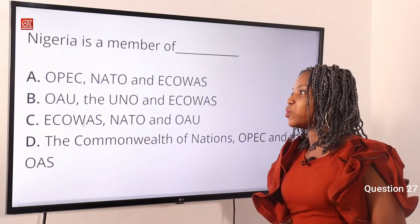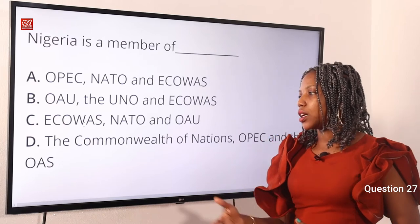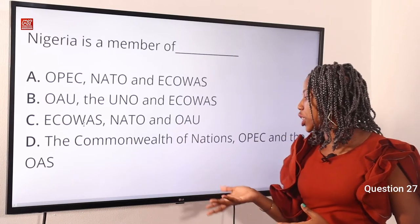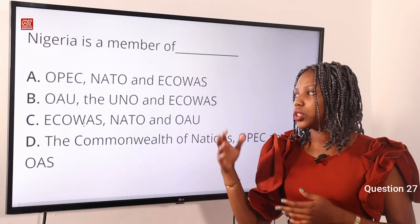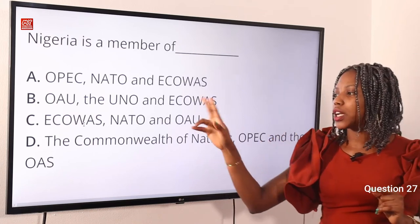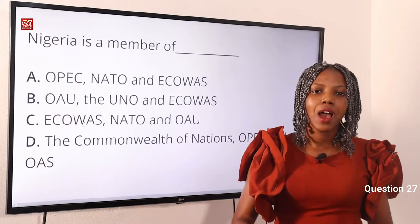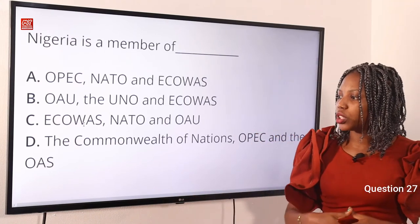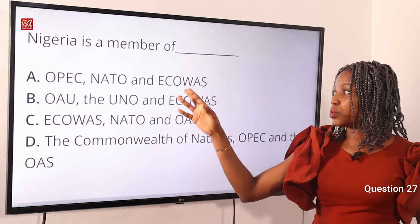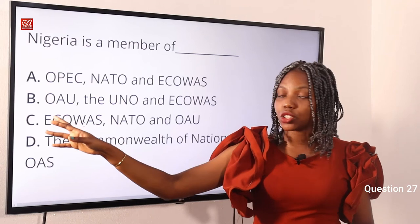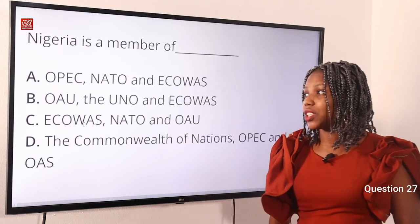Question 27. Nigeria is a member of dash. Option A, OPEC, NATO, and ECOWAS. Option B, OAU, the UNO, and ECOWAS. Option C, ECOWAS, NATO, and OAU. Option D, the Commonwealth of Nations, OPEC, and OAS. The answer is Option B. Nigeria is not a member of NATO — North Atlantic Treaty Organization — or OAS — Organization of American States. OPEC means Organization of Petroleum Exporting Countries, ECOWAS means Economic Community of West African States, OAU means Organization of African Unity, and UNO means United Nations Organization.